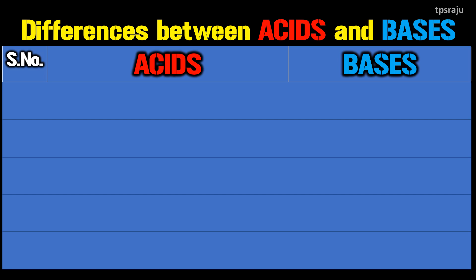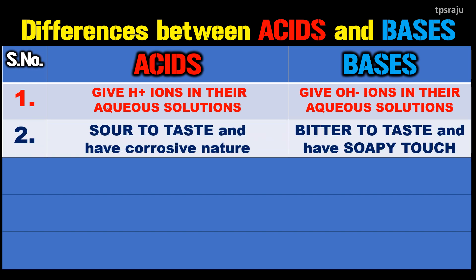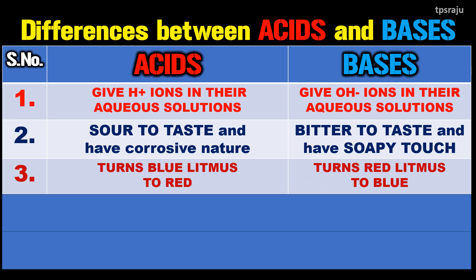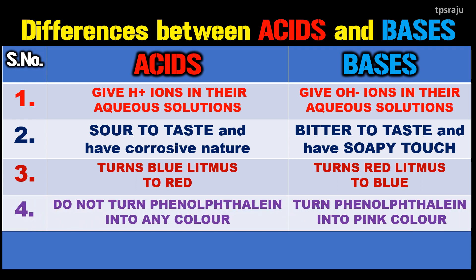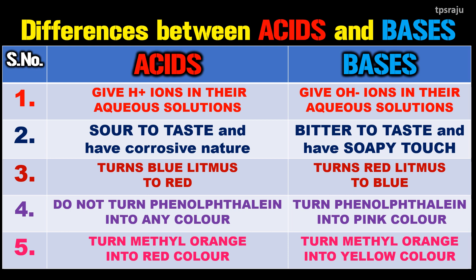Now let us remind the differences between acids and bases. Acids give H+ ions in their aqueous solutions, while bases give OH- ions. Acids are sour to taste and have corrosive nature; bases are bitter to taste and have a soapy touch. Acids turn blue litmus to red, while bases turn red litmus to blue. Acids do not turn phenolphthalein into any color, while bases turn phenolphthalein into pink color. Acids turn methyl orange into red color, while bases turn it yellow.